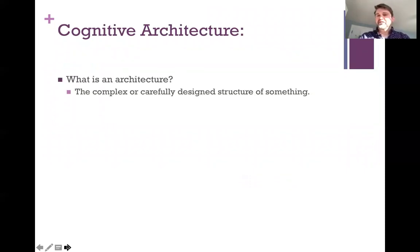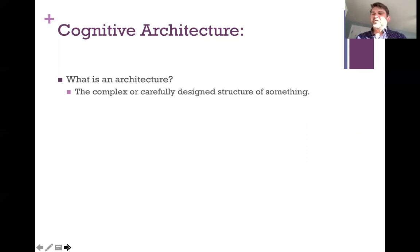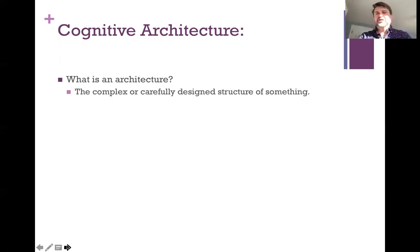I want to start by talking about this concept of architecture that Karsten discusses in her article. What does it mean for a cognitive system to have an architecture? We often talk about buildings having an architecture — my house, main hall. One thing we might mean by architecture is a complex or carefully designed structure of something. I could talk about the architecture of a building, or a tree, or an ant hill.